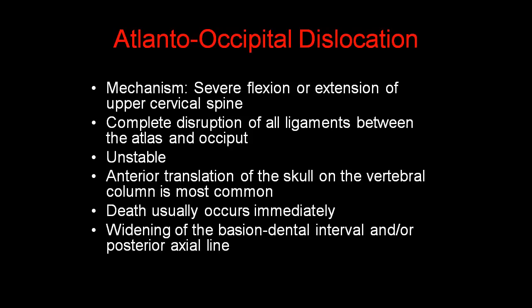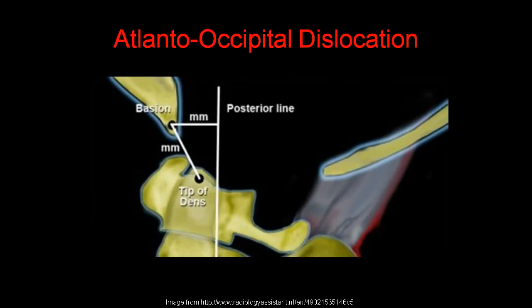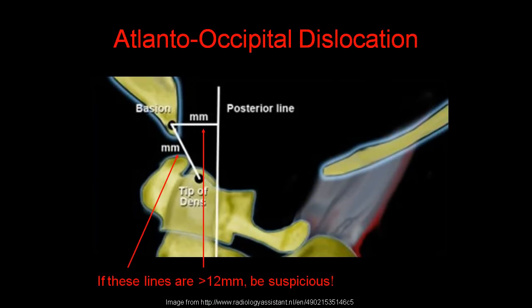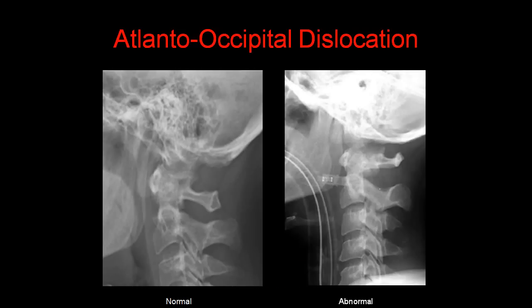Atlantooccipital dislocation is caused by severe flexion or extension of the upper cervical spine, resulting in complete disruption of all the ligaments between the atlas and the occiput. It is highly unstable. The anterior translation of the skull on the vertebral column is the most common pattern. Death usually occurs immediately, and there is usually widening of the basion-dens interval and/or the posterior axial line. Here we see an example: on the left, the C1-C2 relationship is normal; on the right, the entire head is dislocated anteriorly in relation to the C1-C2 vertebral bodies, with increased posterior axial line and basion-dens intervals.